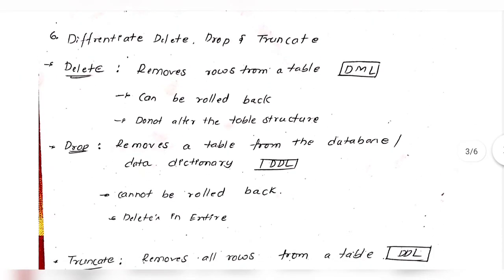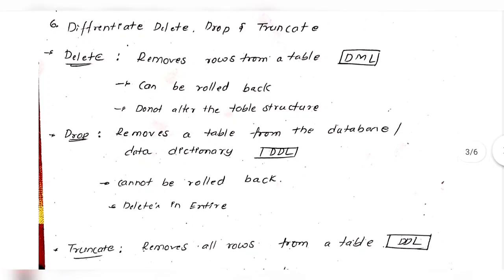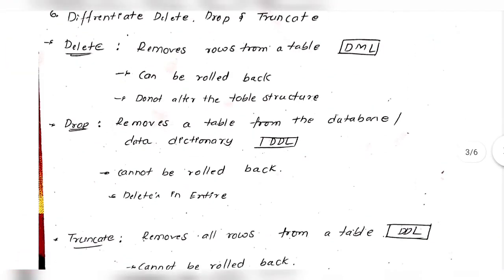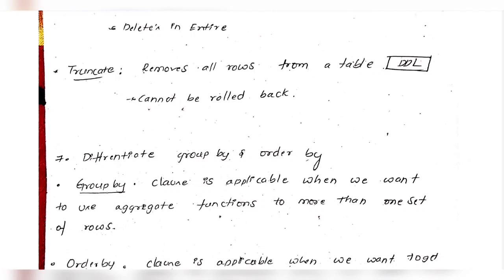Differentiate DELETE, DROP, and TRUNCATE. DROP is a DDL command that removes the entire table from the database, and it cannot be rolled back. TRUNCATE removes all rows from the table but keeps the table structure. DELETE removes specific rows and can be rolled back.